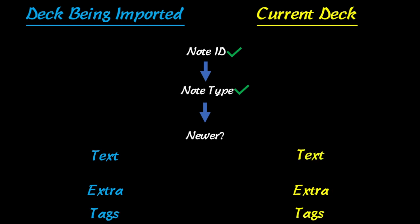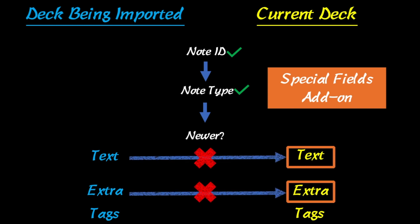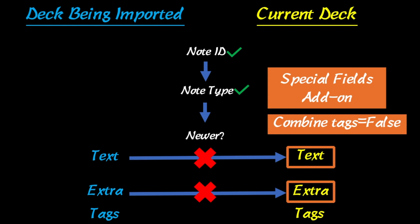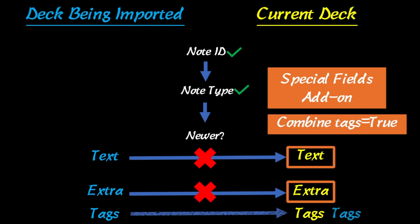The Special Fields add-on also handles tags. If the deck being imported is newer, you're protecting the extra and text fields, and you set 'combined tags' to false, it will overwrite your tags completely even though you protected all the fields. But if you set 'combined tags' to true, you'll keep both sets of tags. This is useful for importing tags from other people. Typically I delete every tag from the deck being imported that I don't want, so only desired tags import.